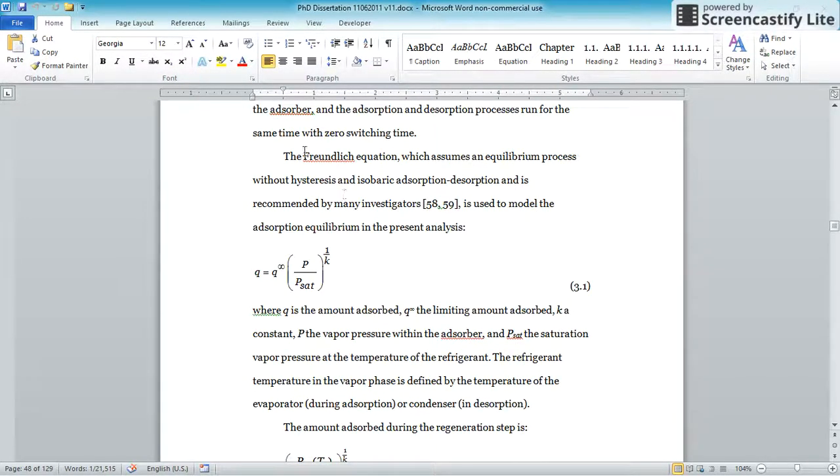Those equations are models for how much refrigerant is adsorbed in the adsorbent material. So here's the Freundlich equation. Basically it looks like this: q is the adsorption ratio. This model is an equilibrium model, meaning there's no rate information here. We just tell the model what is the pressure at a given temperature. It has a certain saturation pressure. This is referring to the refrigerant at equilibrium between vapor and liquid, the VLE.